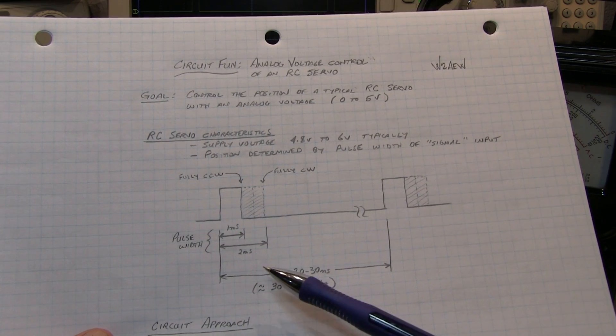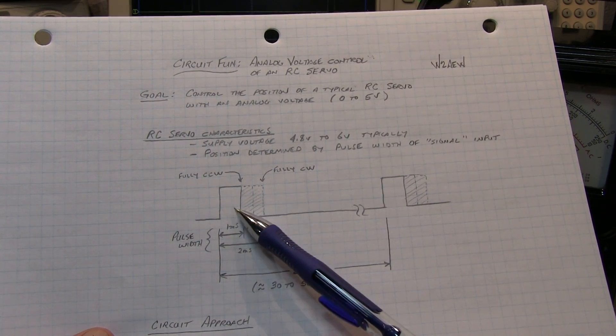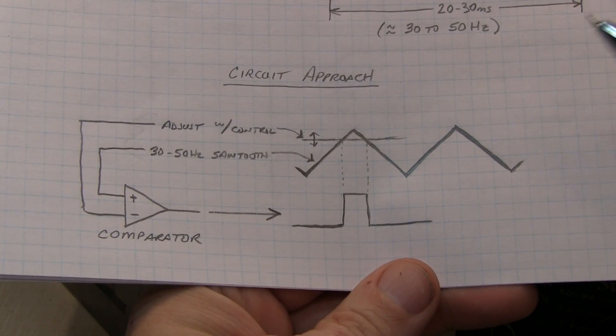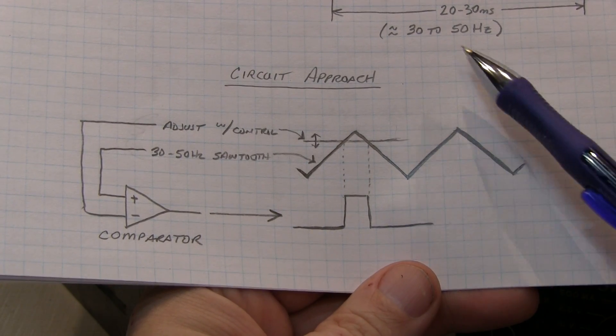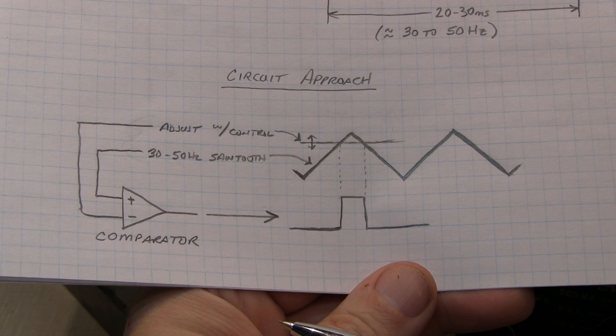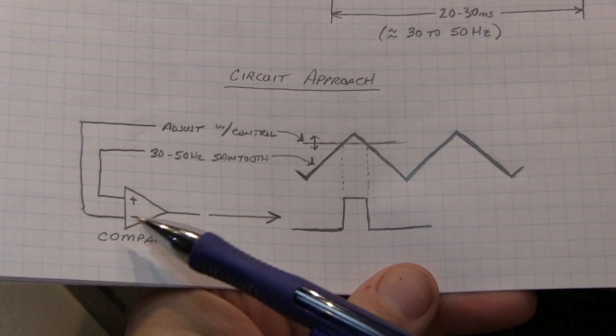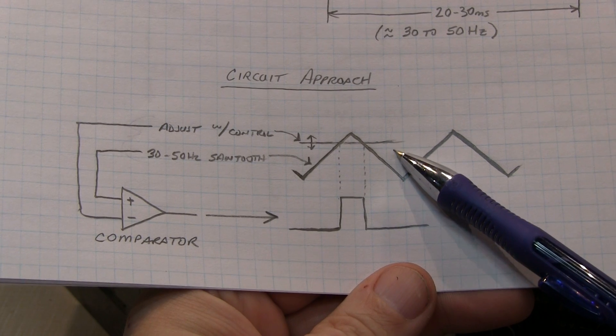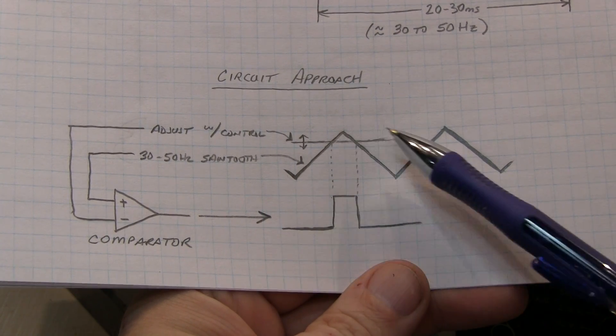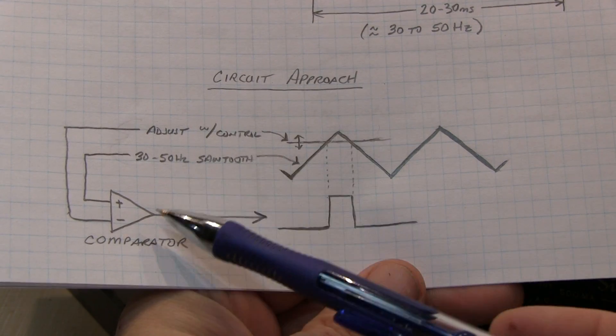So in order to control this servo with an analog voltage, we just need to devise a circuit that creates this pulse width modulated pulse stream where the pulse width varies with a simple analog voltage. Here's the approach that we're going to use. We'll create a circuit that builds this triangle wave at somewhere between 30 and 50 Hertz in frequency. You can certainly use a sawtooth wave as well, but a triangle wave is easy to create. We'll take that along with a DC voltage that we can adjust and move up or down and apply both of those to the inputs of a comparator. And as we adjust this DC voltage up or down, we'll change the crossing point and thus change the output pulse width of the comparator. So the frequency is set by the frequency of our triangle wave, and the pulse width is set by the level of this DC slicing voltage that is going into the comparator.